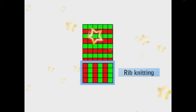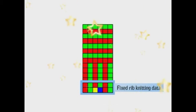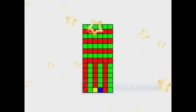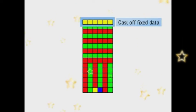Next, draw rib knitting. Next, draw fixed rib data for two lines below the bottom of the pattern. Draw cast off fixed data for one line above the top of the pattern.